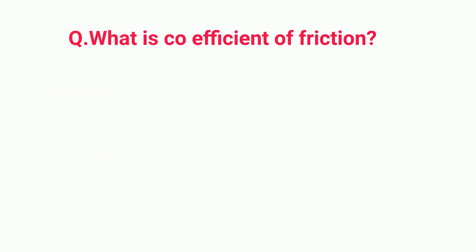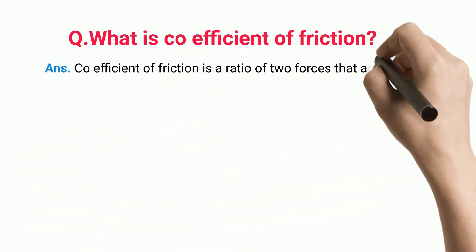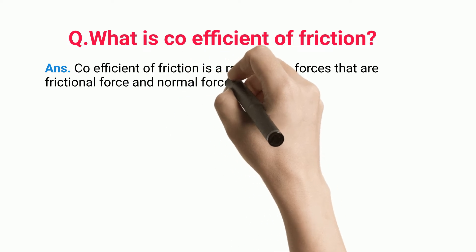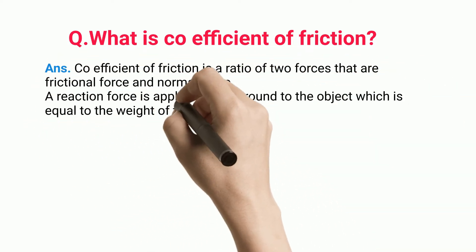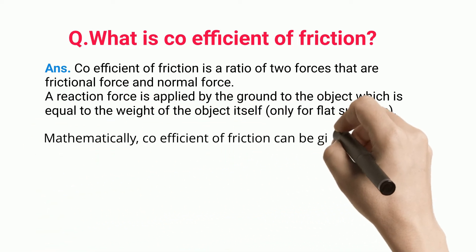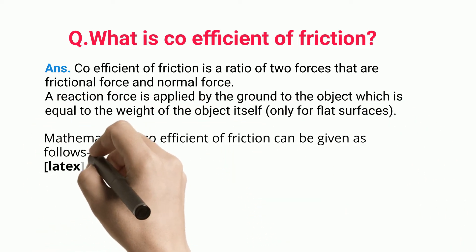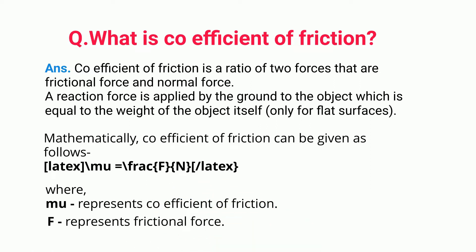What is coefficient of friction? Coefficient of friction is a ratio of two forces: frictional force and normal force. A reaction force is applied by the ground to the object, which is equal to the weight of the object itself (only for flat surfaces). Mathematically, coefficient of friction can be given as mu = f/n, where mu represents coefficient of friction, f represents frictional force, and n represents normal or reaction force.